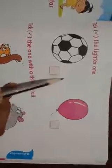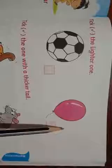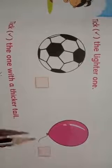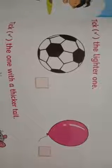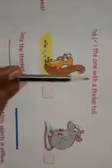So you have to tick the light weight object. In these two objects you have to tick the one with a thicker tail.